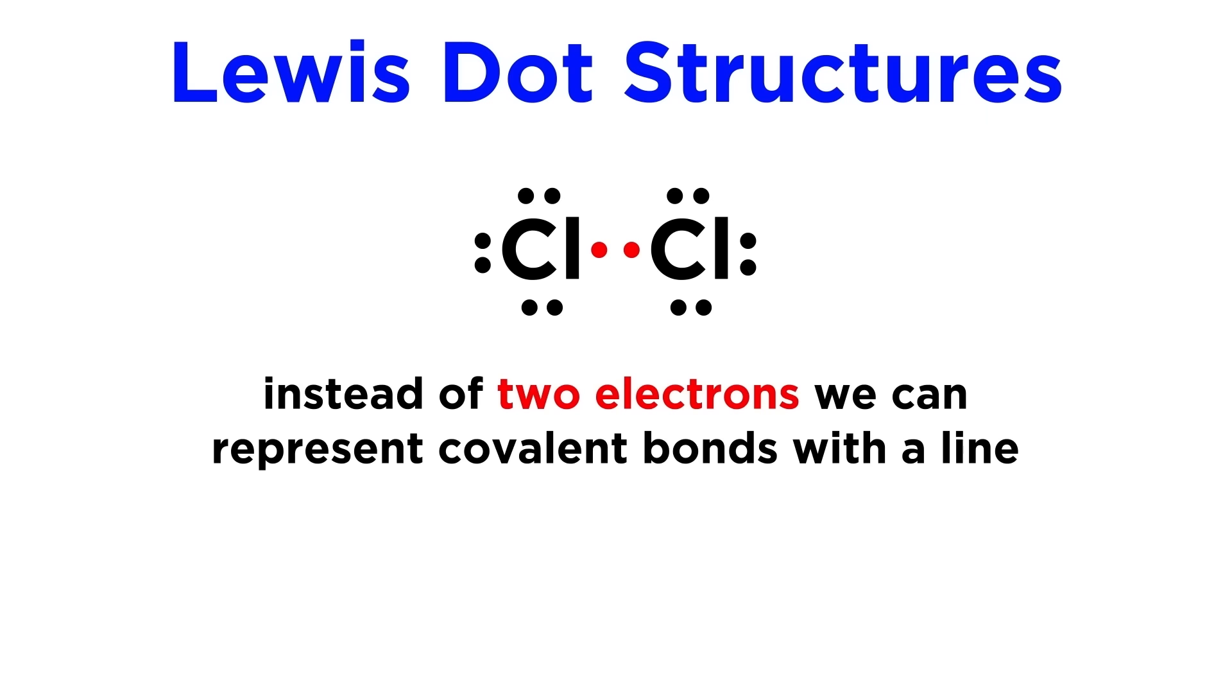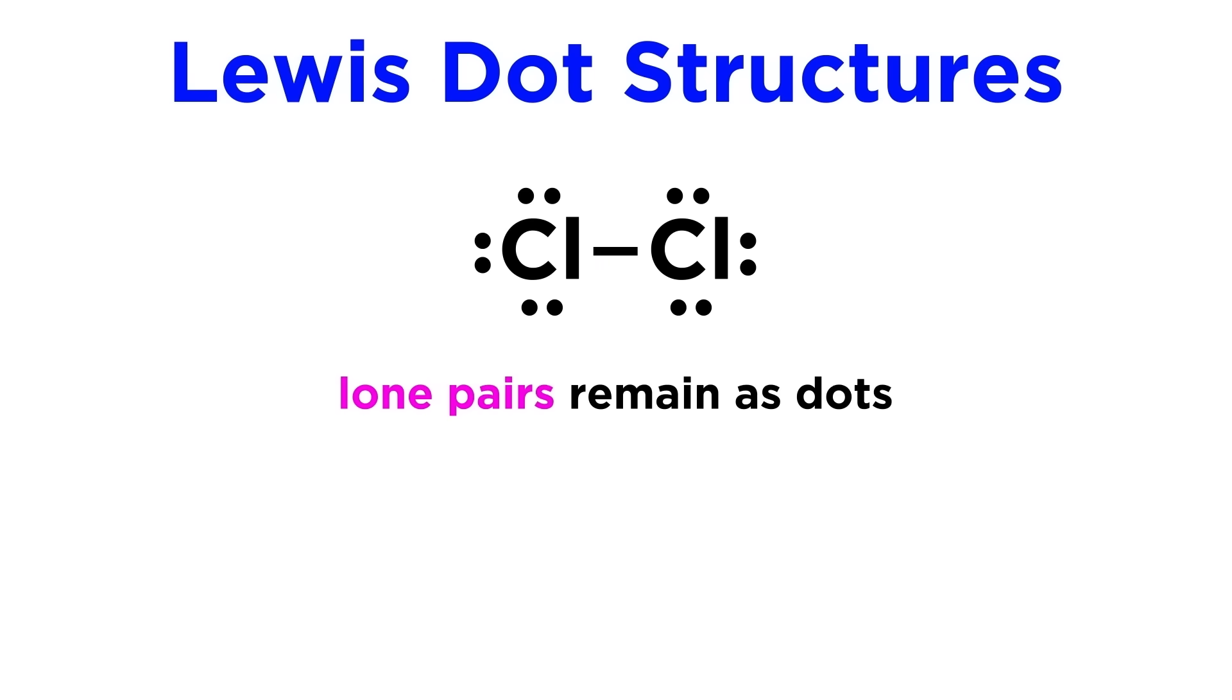In Lewis dot structures, instead of two electrons sitting between two atoms, covalent bonds will be represented by a line. So always remember that any line in a Lewis dot structure represents two electrons. And we can also have lone pairs, which are pairs of electrons that are not participating in any bonds. Each chlorine atom has three lone pairs here.